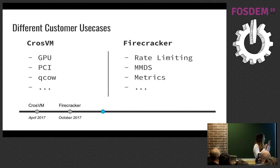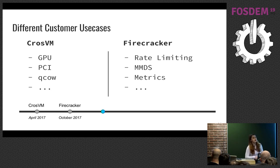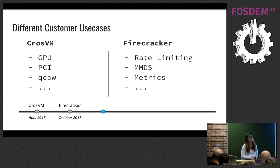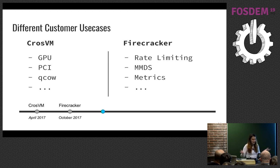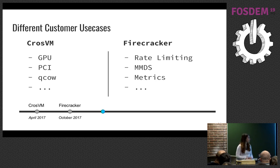They diverged because they have really different customer use cases. CrossVM is providing isolation for Linux applications in Chromium OS, which means you could potentially run something like Photoshop in your Chromebook — and for that, features like GPU and PCI support make a big difference. Firecracker, on the other hand, powers AWS Fargate and AWS Lambda. It runs in a cloud environment at scale, so we added features like metrics, rate limiting for block and network devices, and MMDS, which lets guests query information about the micro VM they're running in.